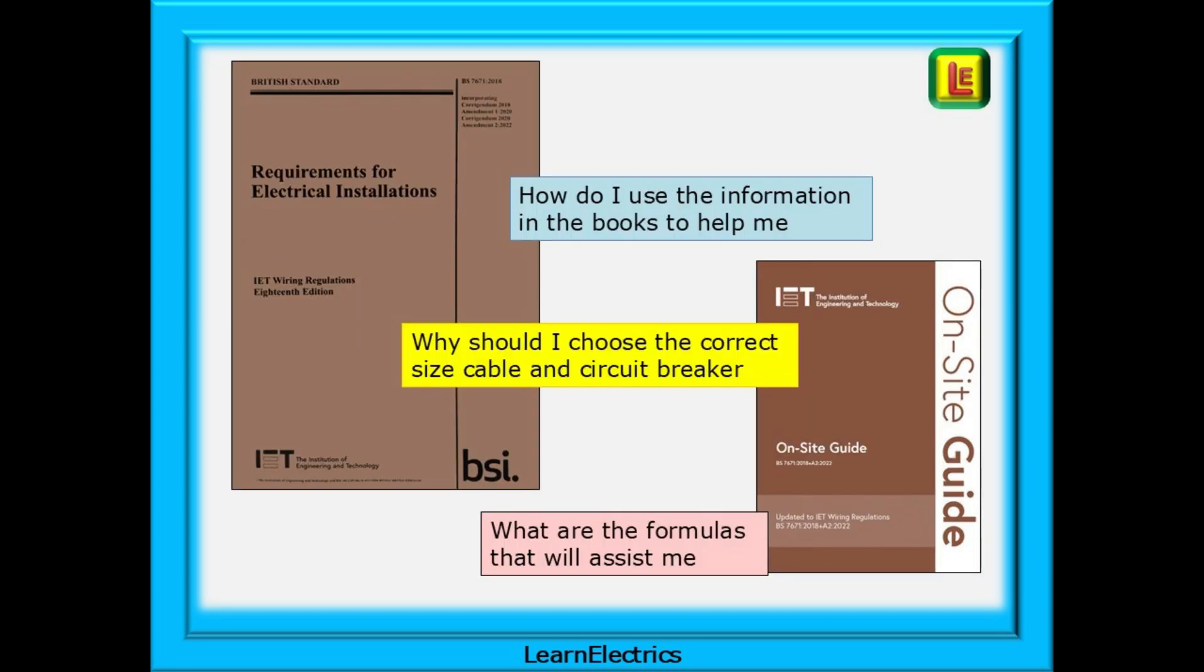We are using the Brown Amendment 2 books and the questions we will answer include: how do I use the information in the books to help me, why should I choose the correct size cable and circuit breaker, and what are the formulas that will assist me.